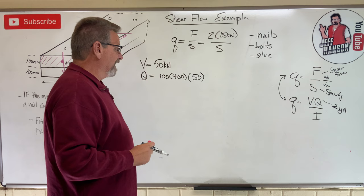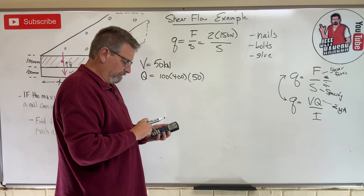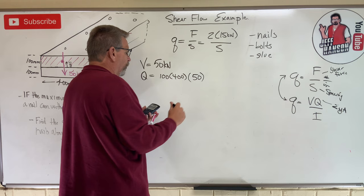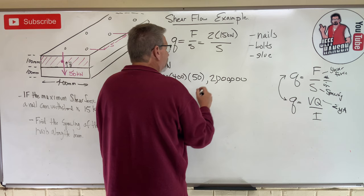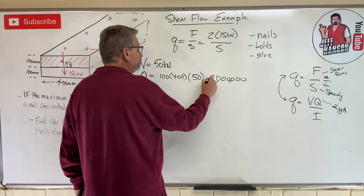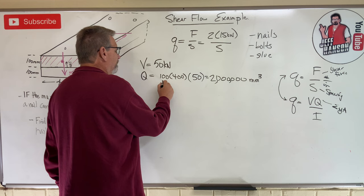Now again, this is in millimeters, that's in millimeters, that's in millimeters. So Q is going to be in millimeters cubed. Okay calculator, what do you got to say? 100 times 400 times 50 is 2 million. Two million, and what is the units on that two million? It's millimeters cubed. Because this was millimeters, that was millimeters, and that was millimeters.